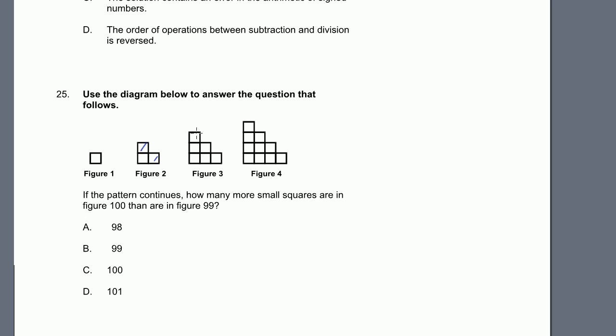We went from 2 to 3, how many did we add? We added 1, 2, 3 squares. We went from 3 to 4, how many did we add? We added 1, 2, 3, 4 squares. Those are the 4 that we kind of layered over, the 3, right there. So when we go from 99 to 100, we're going to add 100 squares.